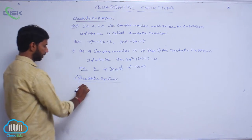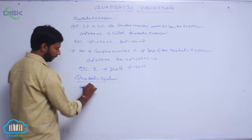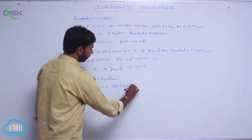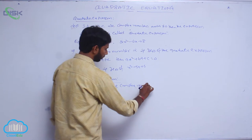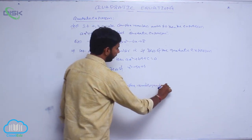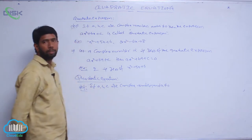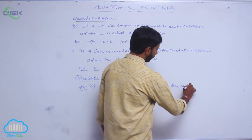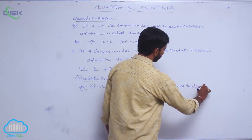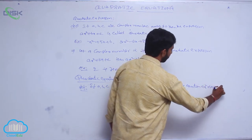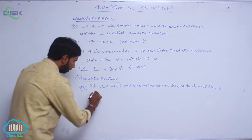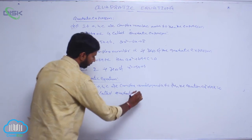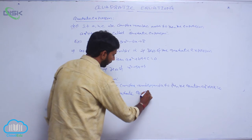Next we go to Quadratic Equation and its definition. If a, b, c are complex numbers and a is not equal to 0, then the equation ax² + bx + c = 0 is called a Quadratic Equation.